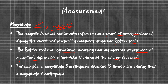Let me show you how the Richter scale is measured. There are units from one to ten. If x is the energy released, for every unit there will be a tenfold increase. For example, if one magnitude is x, then two magnitude will be 10 times x, and three magnitude will be 100 times x. So there will be a tenfold increase with each magnitude. For example, a magnitude 5 earthquake releases 10 times more energy than a magnitude 4 earthquake.